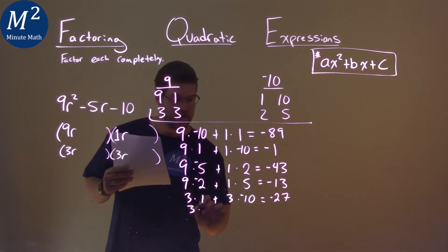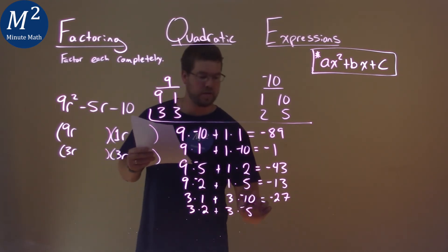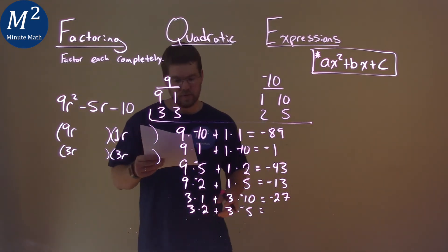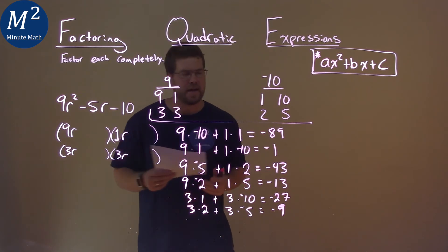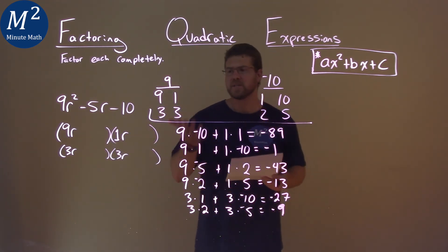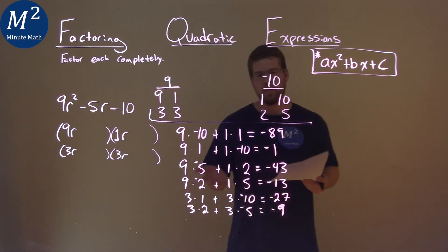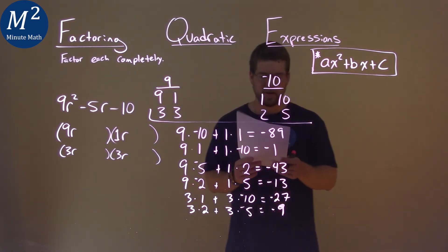What about this one? 3×2 + 3×5, and we put the negative on the 5. 3×2 + 3×(-5) is -9, and we're still not at -5. We've actually exhausted all the possibility combinations here, and smartly that could work with the negatives, and nothing shows up.